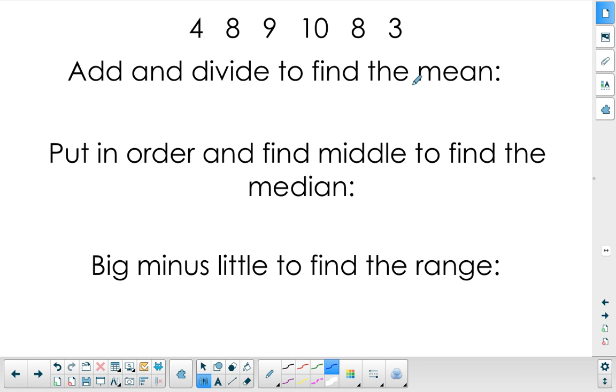When we are finding the mean or the average, we need to add up all of our data. So we have 4, 8, 9, plus 10, plus 8, plus 3. Once we have the sum, it's 42.